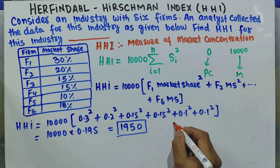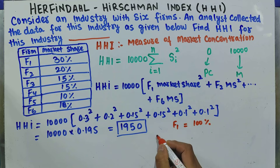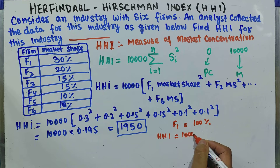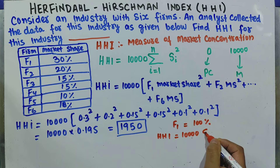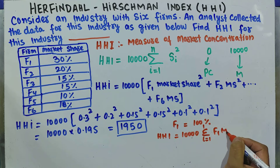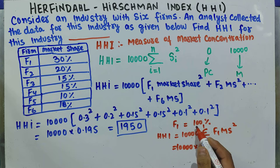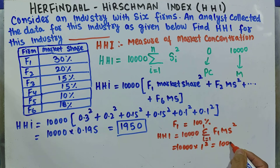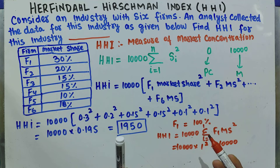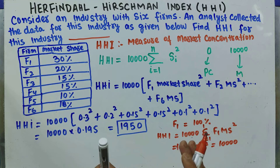Let us verify: if we have only one firm and its market share is 100%, then HHI = 10,000 times the summation from i = 1 to 1 of F1's market share squared. That gives us 10,000 times 1 squared, which equals 10,000. So when we have a single firm, HHI = 10,000, confirming monopoly.